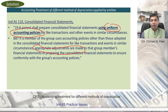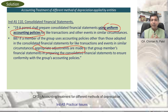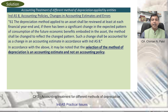This ensures that accounting policies are uniform and the financial statements are consolidated after considering all accounting policies for the group as one. The question then arises: does that mean we need to have one depreciation method for property, plant and equipment across the holding company, subsidiary, and associate altogether?